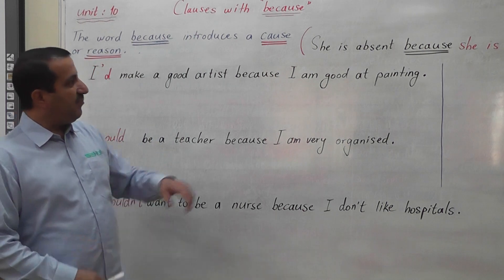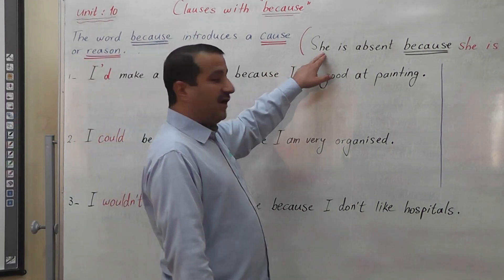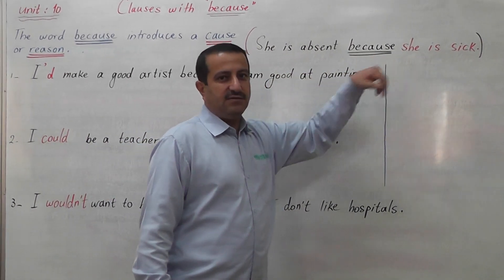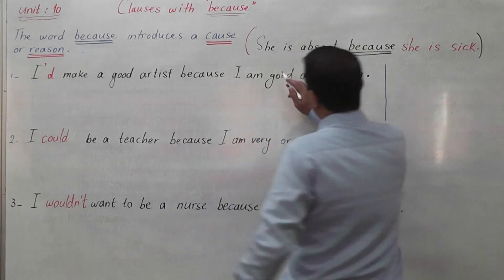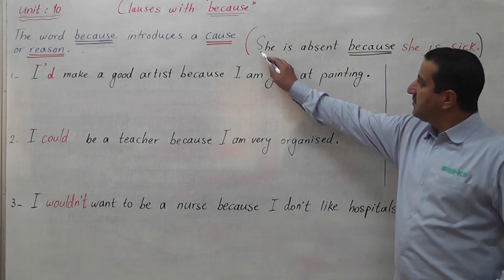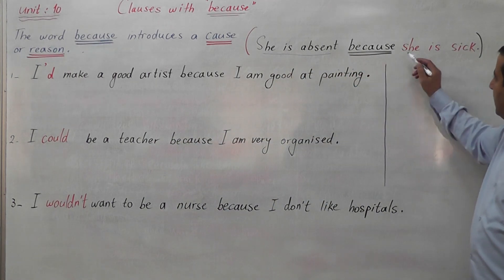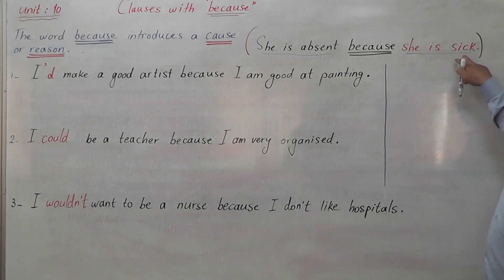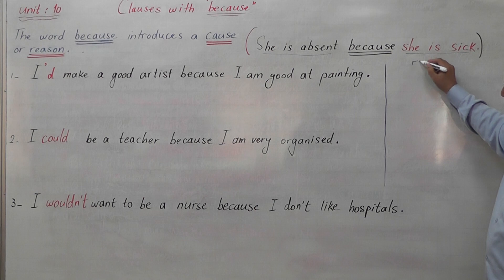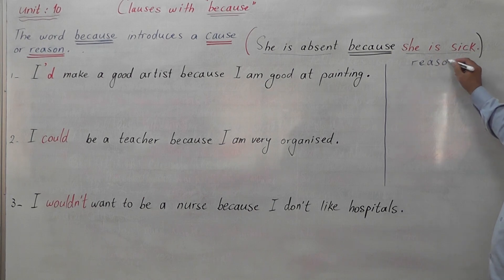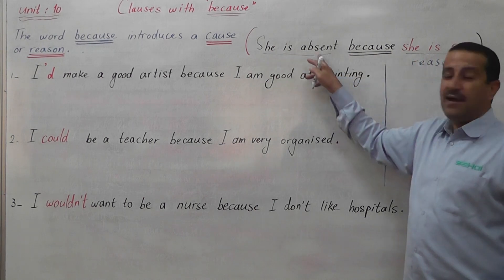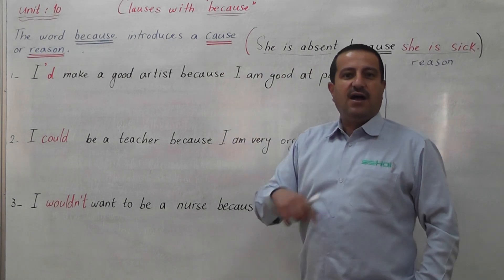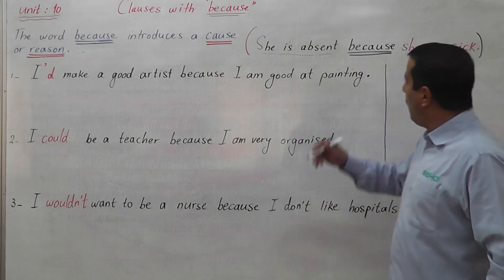For example, if we look at the sentence: 'She is absent because she is sick.' Here we have two clauses — 'she is absent' and 'she is sick.' 'She is sick' is the reason why she is absent. So the word BECAUSE answers the question WHY.